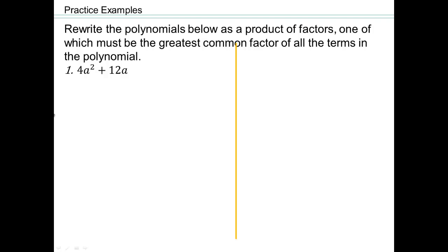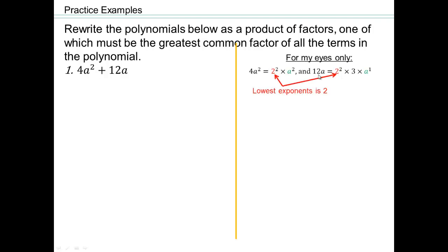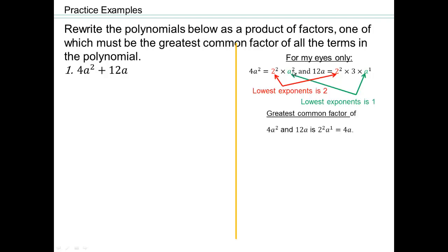We use LCM when adding rational expressions to make a common denominator. Now let's see where we use greatest common factor. Suppose we have the polynomial 4a squared plus 12a — our goal is to factor. Look at 4a squared and 12a: 4 is 2 squared, a squared is a squared; 12 is 2 squared times 3, and a is a to the first. For GCF, we pick 2 squared and the lowest exponent of a, which is 1. So the greatest common factor is 4a.